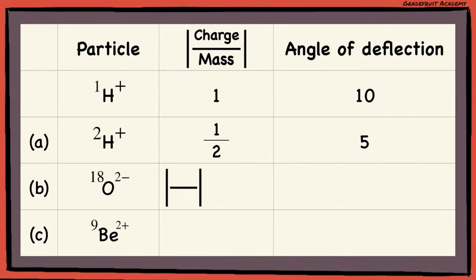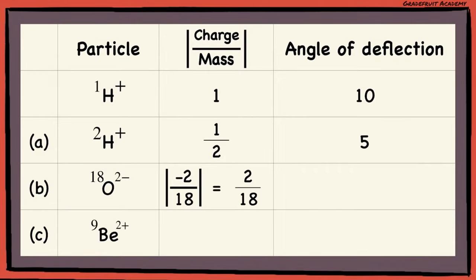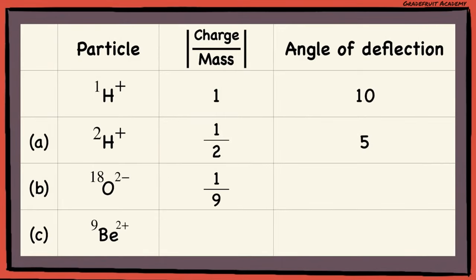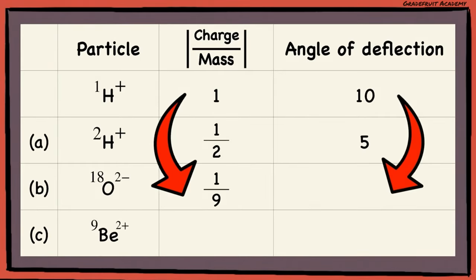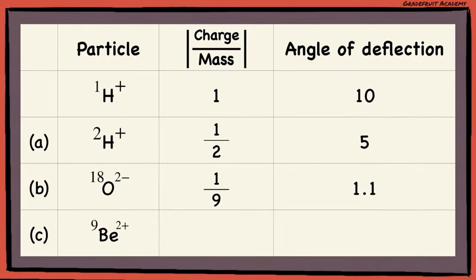For part B, the charge is 2− and the relative mass is 18, so the magnitude of the charge-to-mass ratio is 2/18, which simplifies to 1/9. Note that we do not care about the sign — we just want the value or the number. Hence, the angle of deflection will be 1/9 times 10, which gives 1.1 degrees rounded to 1 decimal place.